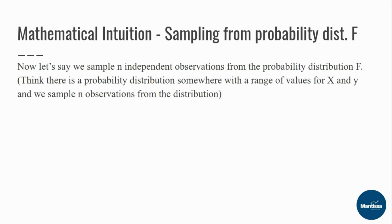Let's move on and start sampling from the probability distribution f. We sample n independent observations from f, which is a function of (x, y) given theta and sigma as parameters. Think of it this way: there is a probability distribution with a range of values for x and y, and we sample n observations from it. If you think of a normal distribution shaped like a mountain, what we're doing is pulling out some sample values — that is what sampling n independent observations means.